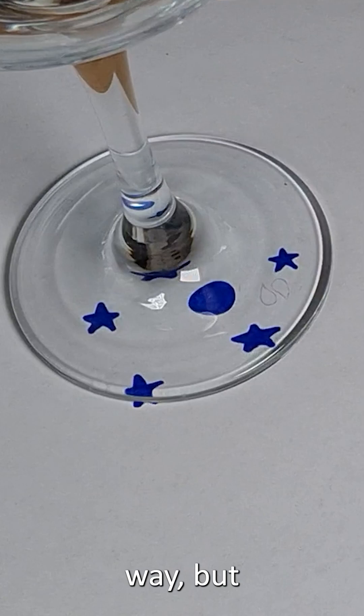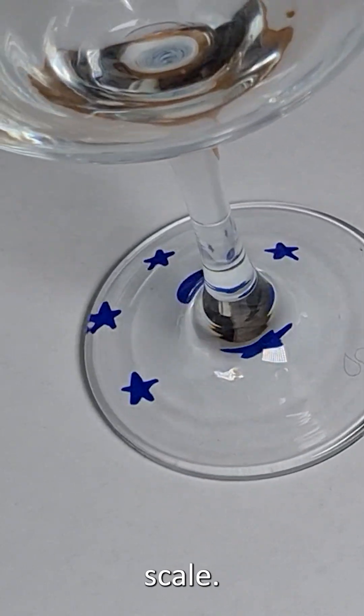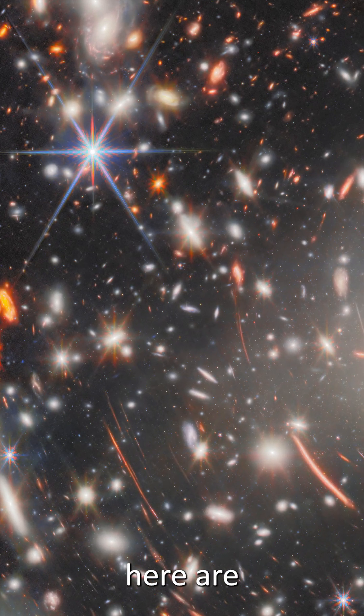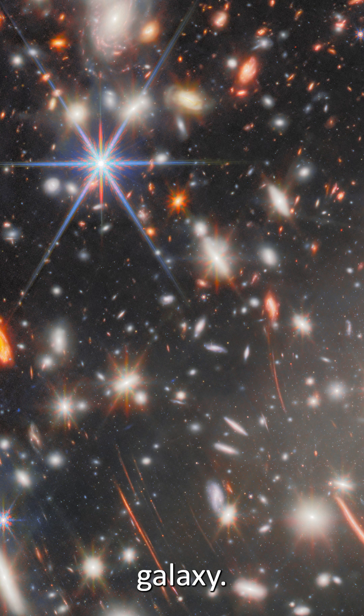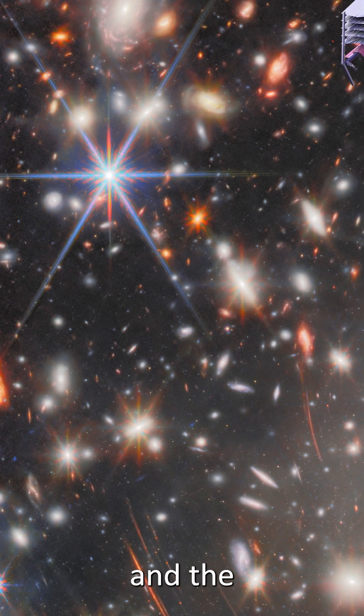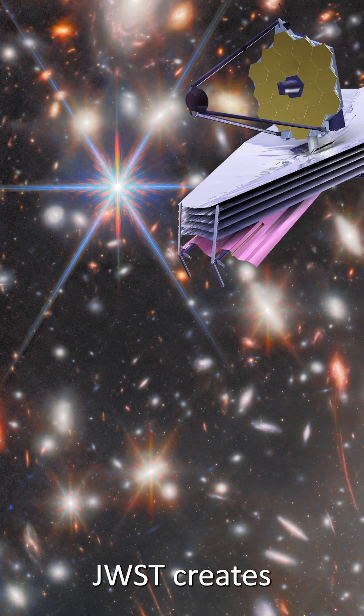Glass distorts light in a similar way, but on a totally different scale. These spiky objects here are bright stars in our own galaxy, photobombing the image, and the hexagonal JWST creates the spikes.